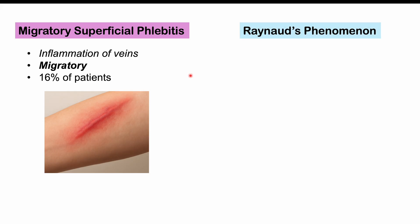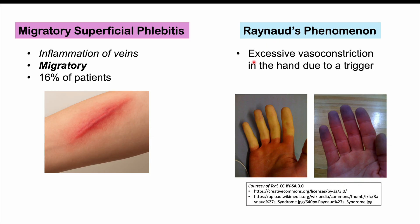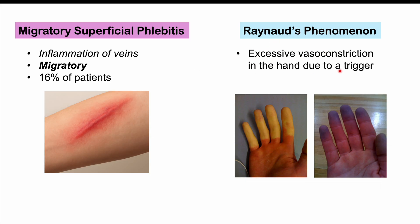We can also see Raynaud's phenomenon occurring in some patients with Buerger's disease. Raynaud's phenomenon is where there is excessive vasoconstriction in the hand due to a trigger, generally cold. The hand becomes white, then blue, changing color due to too much vasoconstriction and lack of blood flow, then finally returns to adequate blood flow. This is related to the reduced vasorelaxation discussed earlier, and clots can worsen Raynaud's phenomenon as well.